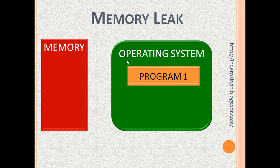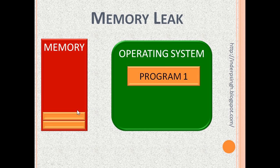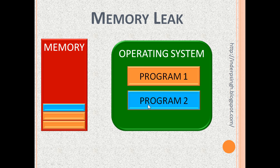This is the operating system and this is the memory. The memory is under the control of the operating system. The program is run by the operating system. As the program runs, it requests memory from the operating system. The operating system allocates memory to the program. It is the responsibility of the program to release unneeded memory back to the operating system. The freed memory can be used by the operating system to allocate to other running programs.